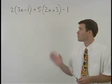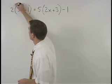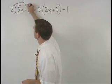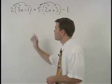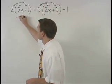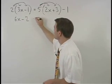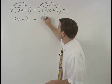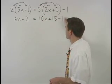In this equation, we start by distributing through the parenthesis on both sides. On the left, we get 6x minus 2, and on the right, we get 10x plus 15 minus 1.